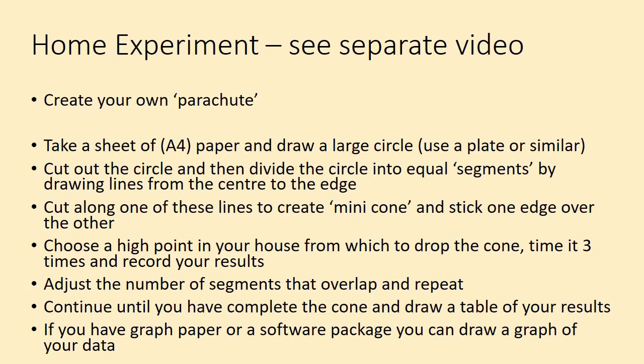And then the main task for today is a home experiment. As I said, there's a separate video for this that I will share with you. The link for that will be on Go for Schools and for Teams. And it's for you to create your own parachute and to have a go at getting some measurements for terminal velocity. So the instructions are here. You'll need a sheet of A4 paper or roughly A4 and you'll need to draw a large circle using maybe a plate or something. Now, I'm not going to go through these instructions because the video itself will explain it in a lot more detail. But you need to essentially, once you've created your parachute, your mini cone, choose somewhere in your house from which to drop it and time it three times and record your results. If you can get somebody else to help you, that would be brilliant because then you can concentrate either on the dropping or the timing.